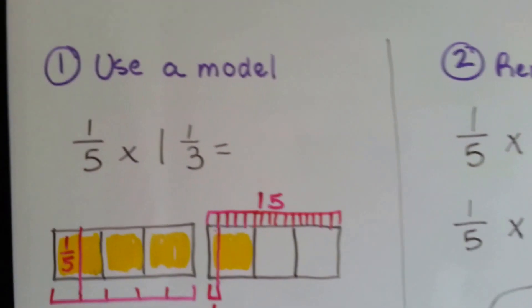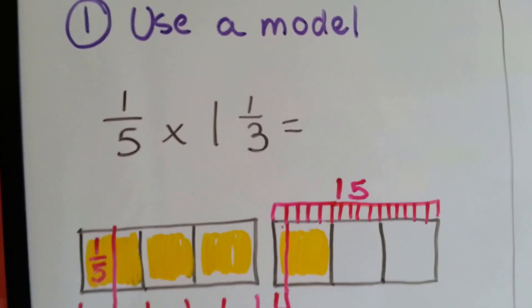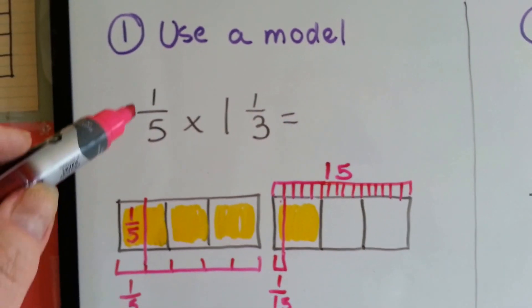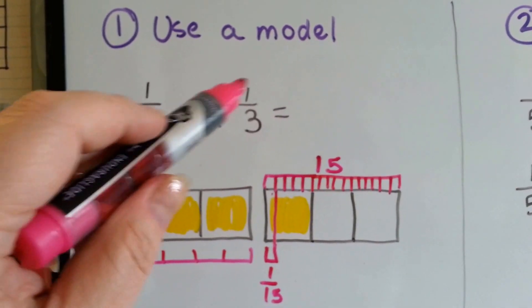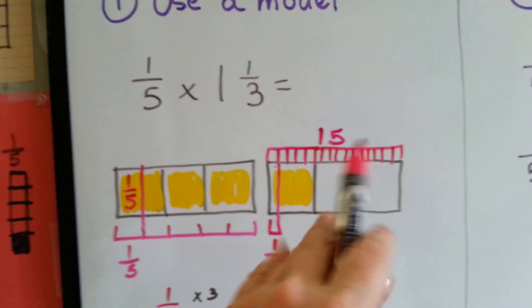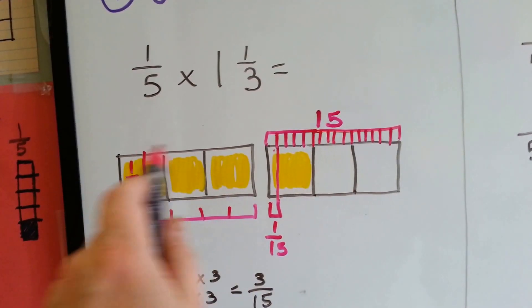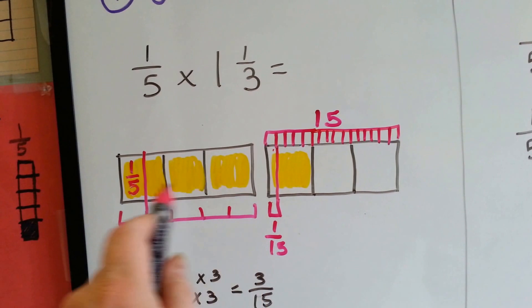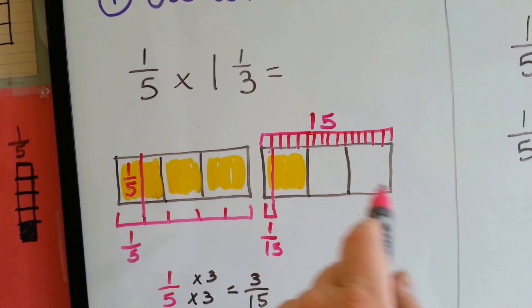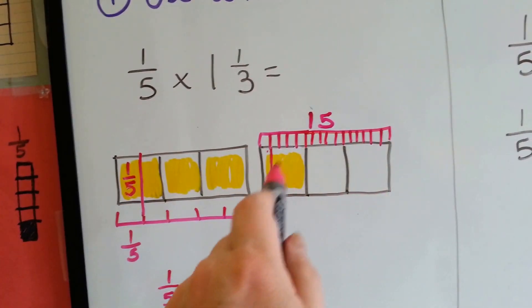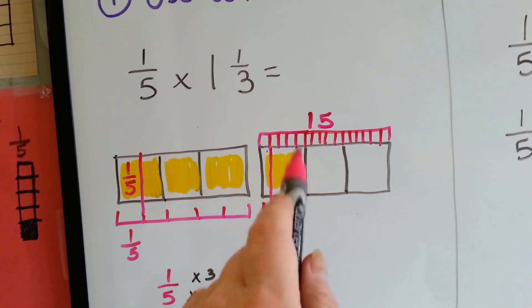Okay, here's the first way we can multiply mixed numbers. We can use a model. If we have 1 fifth times 1 and 1 third, the first thing we do is we make models of 1 and 1 third. I made 1, that's these 3 boxes, and then I made a second set of boxes and I filled in a third of it. So that's 1 and 1 third.